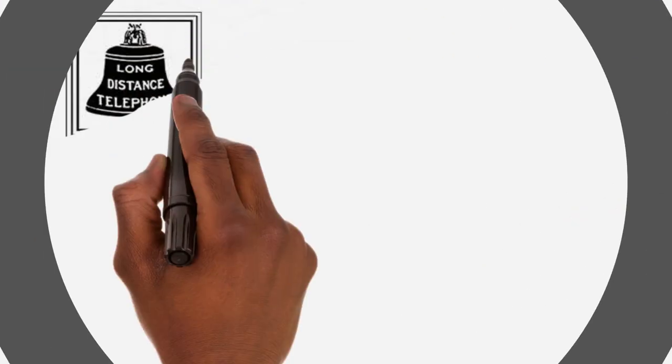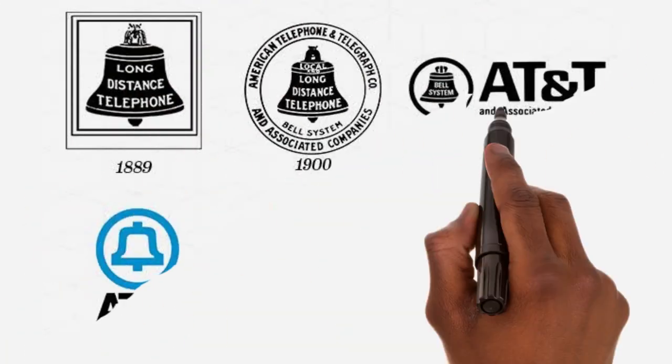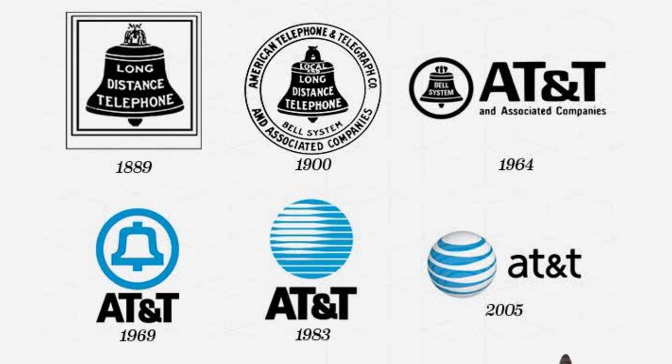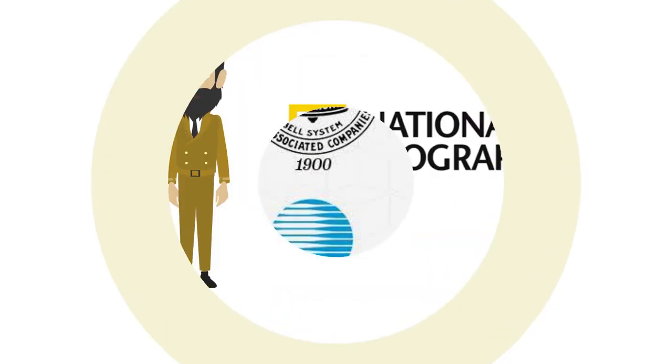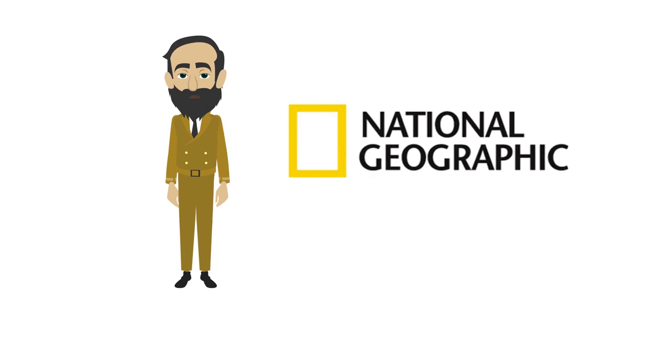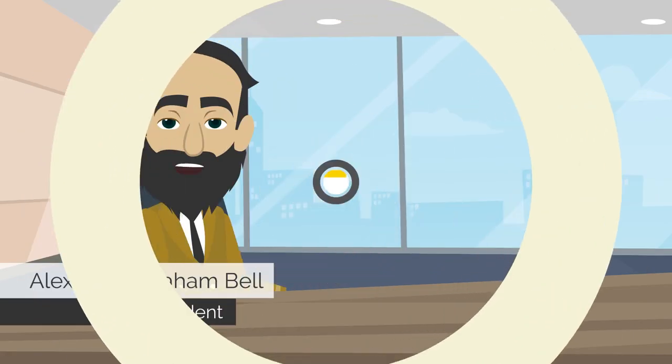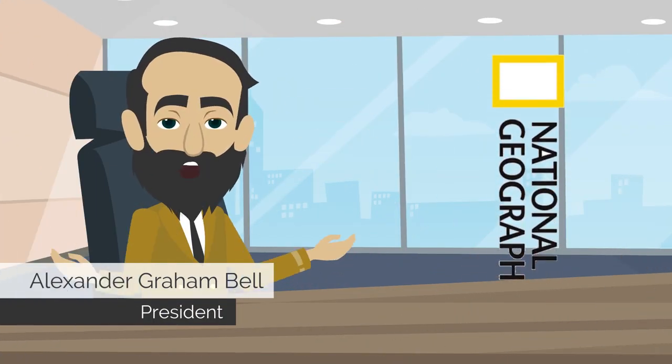In 1885, Graham co-founded the American Telephone and Telegraph Company AT&T. In 1888, Graham became a founding member of the National Geographic Society. He later served as president of the society between 1898 and 1903.